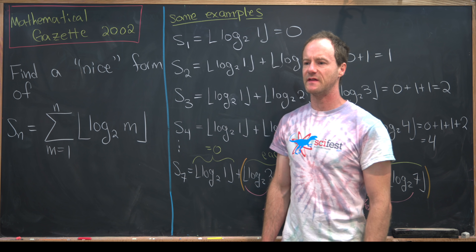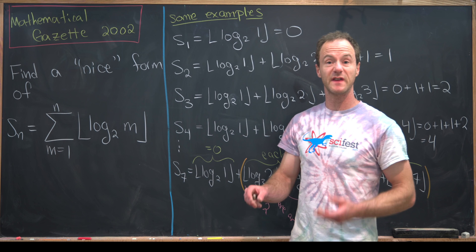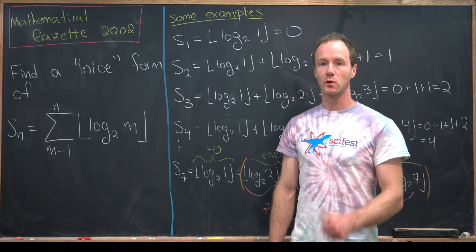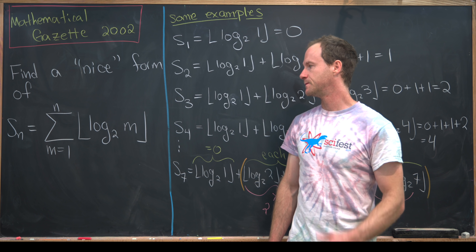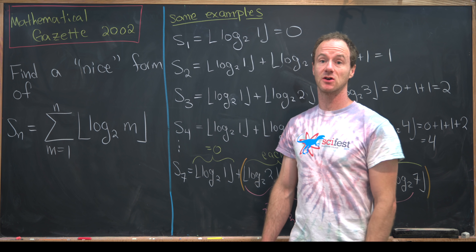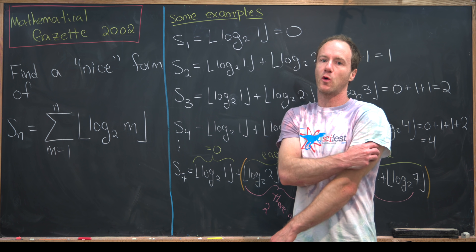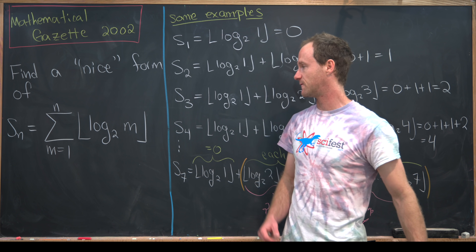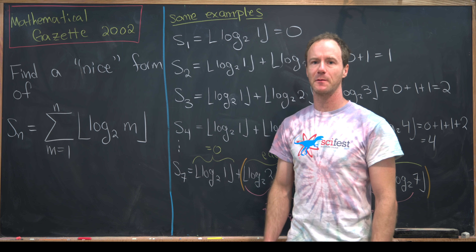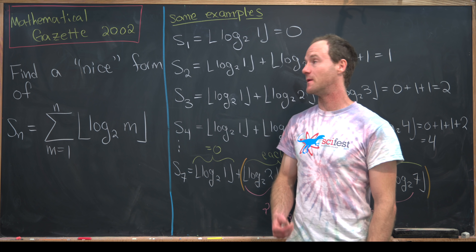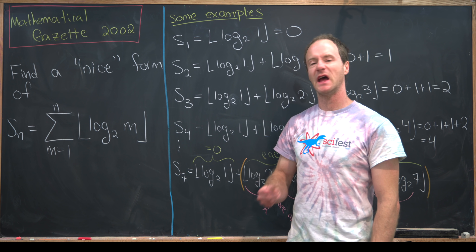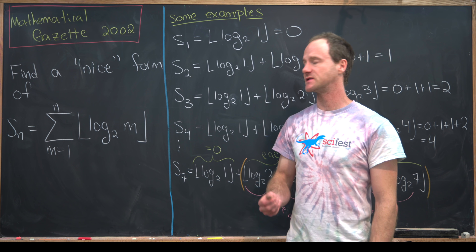I've got a nice problem today that involves three things that I really like: the floor function, the logarithm, and finding the closed form or a nice form for a sum. This comes from a magazine called the Mathematical Gazette, and it's from the year 2002.